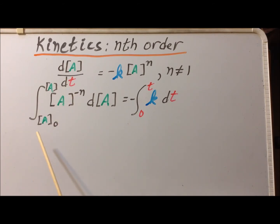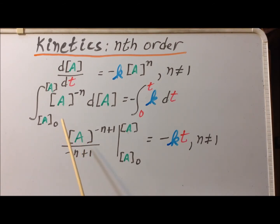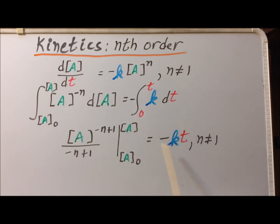The integration limits on the left-hand side are going to be A sub 0, which is the initial concentration of A, to A, which is the current concentration of A, and on the right-hand side between time t equals 0 and time t equals t. Then we can use the general form for the integral of some variable to the minus nth power, so long as n is not equal to 1, and we have that it's going to be A to the minus n plus 1 divided by minus n plus 1, and then we evaluate it between the limits of the integral using the fundamental theorem of integral calculus. The right-hand side simply becomes minus kt, since at one of the limits t is equal to 0 and that vanishes.